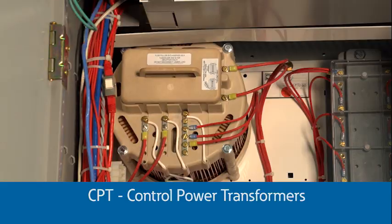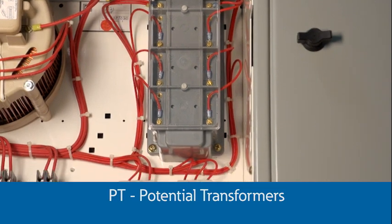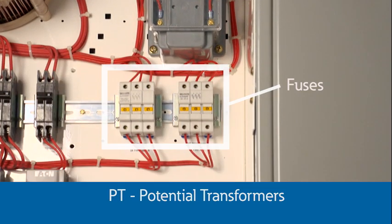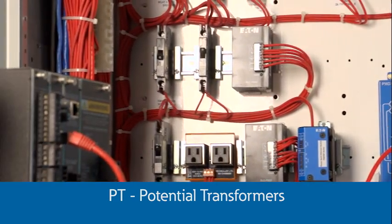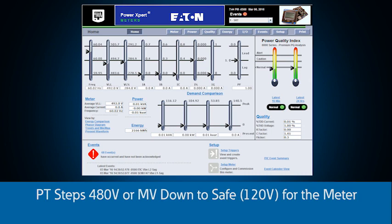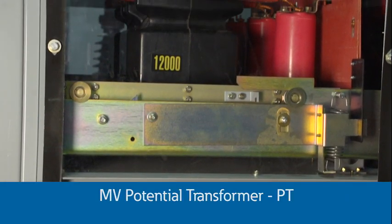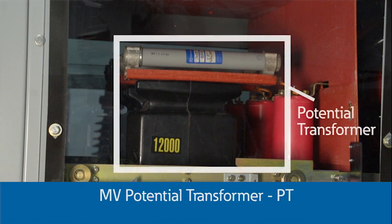Control power transformers are used, as their name implies, to feed the control power in motor control centers and switchgear. They're generally less than 1 kVA, but may be 5 to 30 kVA for medium voltage substation applications. Another variation, often referred to as a PT or potential transformer, is used to step the voltage down for metering applications. In switchgear like this, the voltage on the open door cannot exceed 150 volts, so a PT steps the 480 volts down to 120 volts for the meter, and the meter applies the 4 to 1 ratio on the measurement. This is especially important in medium voltage switchgear, where the PT steps the voltage down to a safe level in the metering and relaying sections.